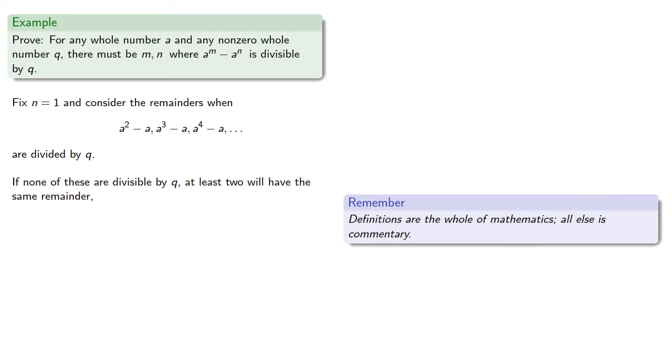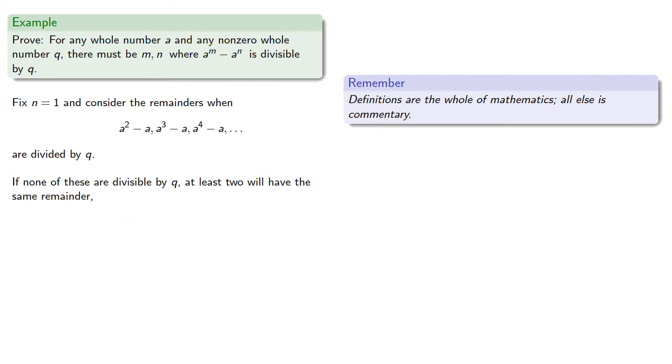So remember, definitions are the whole of mathematics, all else is commentary. If two things have the same remainder, that must mean they're something times the divisor plus that remainder.